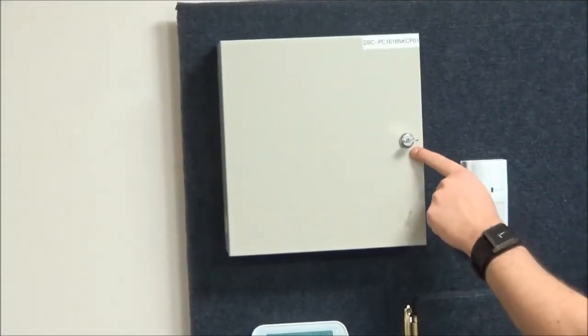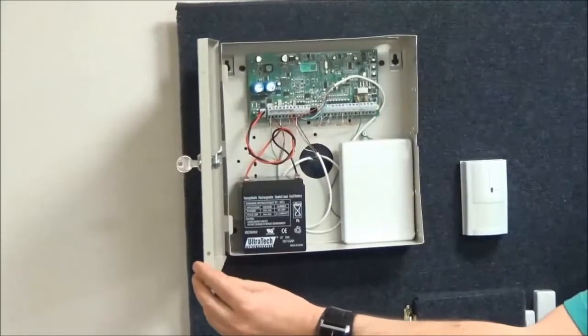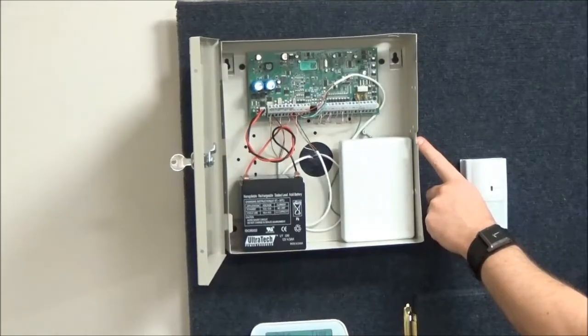Using your panel box key, open the front cover of the cabinet. If there is no key, you will need to remove the screw on the right hand side of the panel box.